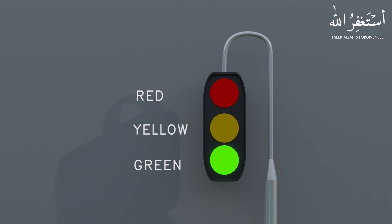The green light indicates that the traffic can move and proceed through the signal. The yellow light indicates proceed with caution. The red light indicates traffic must stop. Now let's discuss the PLC wiring for these light indicators.